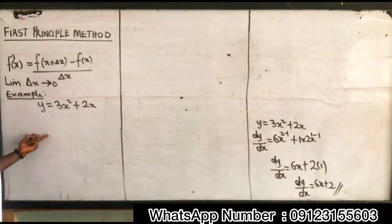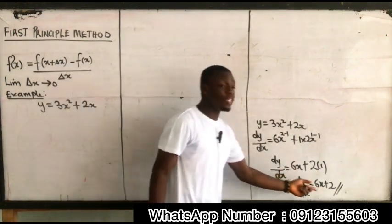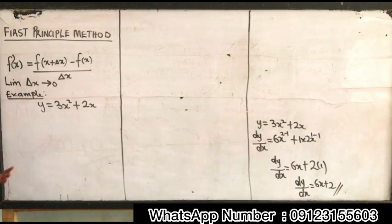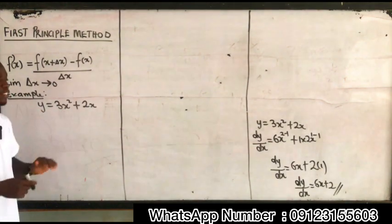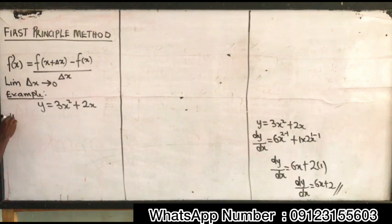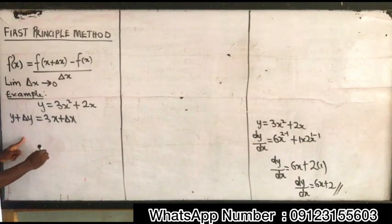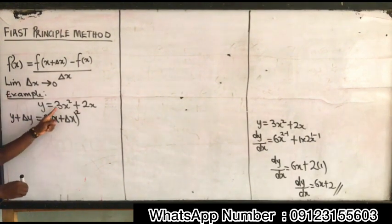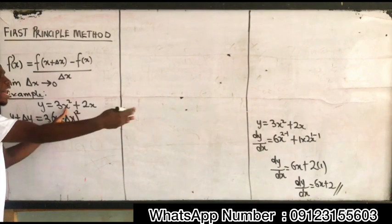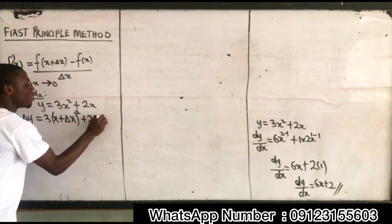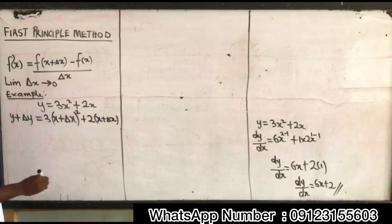Now let's apply the first principle method to solve this and see if our answer is the same. The idea of the first principle is: add change. So if I see y, I add change in y; if I see x, I add change in x. So I have y plus change in y equal to 3 times x plus change in x, all squared, plus 2 times x plus change in x.